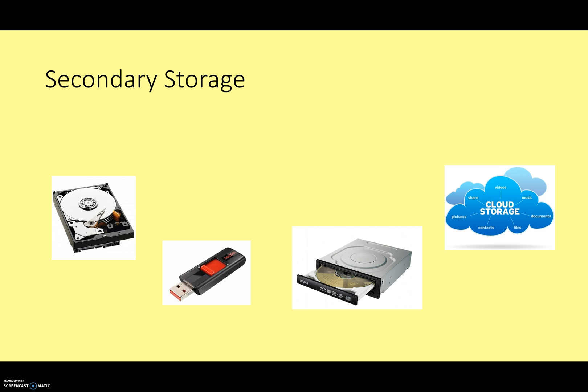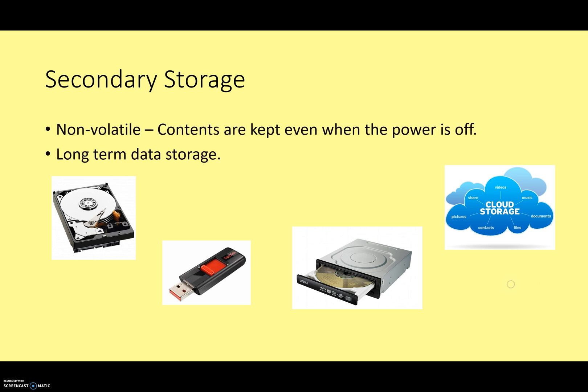That brings us to the next type of memory: secondary storage. The problem with RAM is that it only holds data while there's power. So you need something that can hold lots of data even when the computer is turned off. This is why secondary storage is always non-volatile — even when the power is off, secondary storage devices remember their contents, so we can use it for long-term data storage.